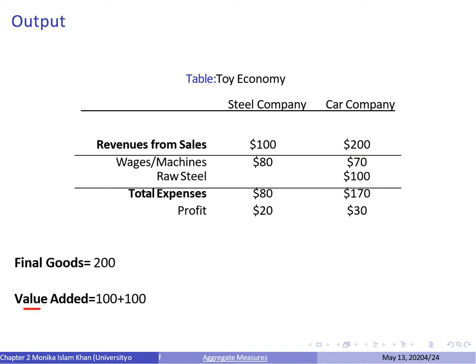Using the value added method, we calculate how much value is added by each company to the economy. The steel company is adding $100 worth of value. The car company has revenue of $200 but uses $100 worth of intermediate goods — steel — so the value they're actually adding is $200 minus $100, which is $100. So their combined value added is also equal to $200.